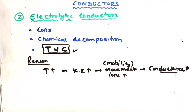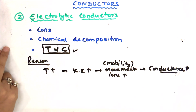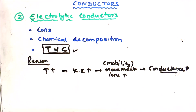So as temperature increases, kinetic energy increases, ion mobility increases, and conductance increases. You can now try writing the differences between metallic and electrolytic conductors. In the next topic, I will go through those differences.